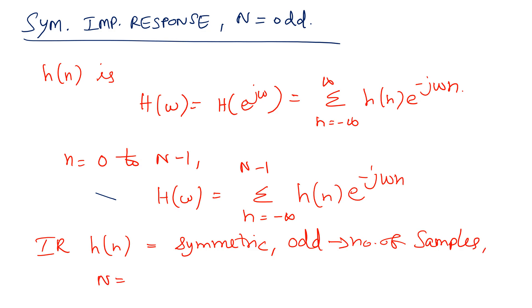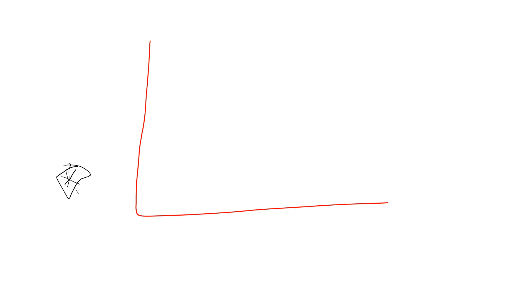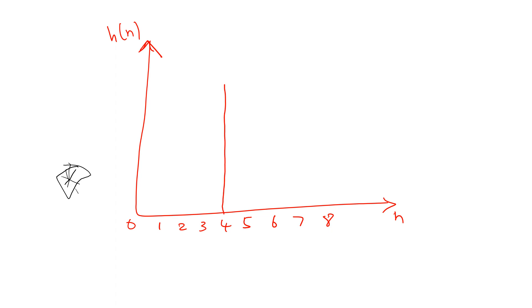For example, I am taking N equal to 9. If we draw the diagram for this symmetric, N equals odd case, the impulse response will look like this: the x-axis is n and y-axis is h(n), with values 0 through 8. The symmetric line is going to be at n equal to 4, which is the center of symmetry. This is h(n), the symmetric impulse response for N equal to 9.